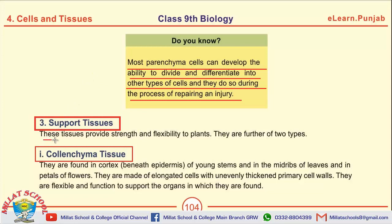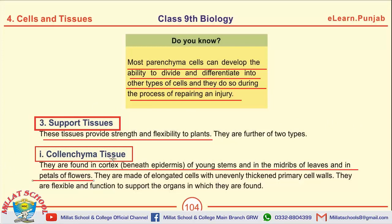Support tissues are those tissues which provide strength and flexibility to plants. What are collenchyma cells? Collenchyma cells are found in the cortex of young stems, in the midrib of leaves, and in the petals of flowers. They are made up of elongated cells with unevenly thickened primary cell walls. The function of collenchyma tissue is to support the organs in which they are found, providing strength as well as flexibility to plants.